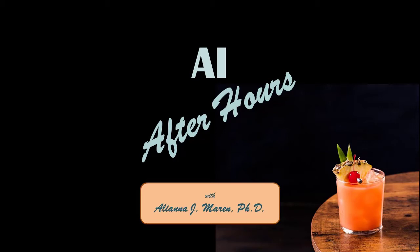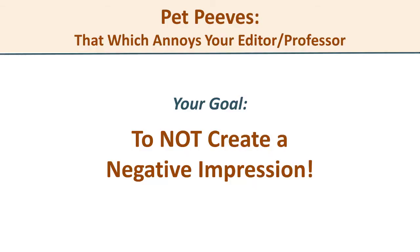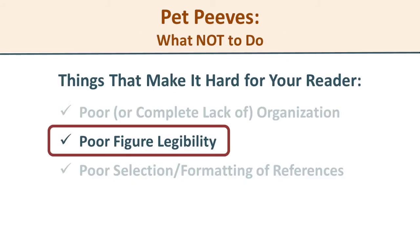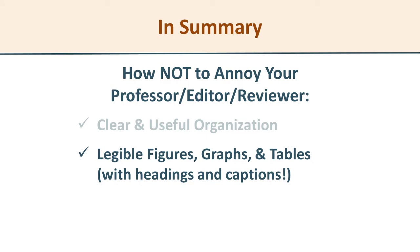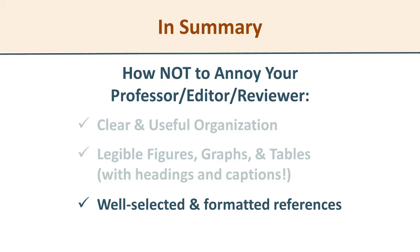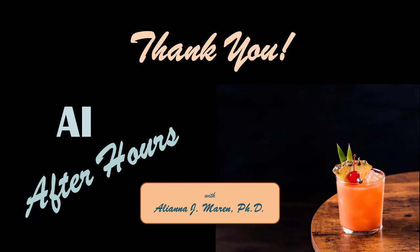Let's briefly recap where we are. You're in AI After Hours with Dr. AJ, and lately this series has been focused on how to write a research paper. You're in one of a series of videos on pet peeves, which are the antithesis of what we're trying to achieve. In this video we've focused on how to create legible figures. Previous videos dealt with organization, and coming up next we'll have material on crafting and correctly citing a good set of references — that'll be ultra important, so look for that one. Thanks for joining me — it's Dr. AJ, and I'll see you soon.